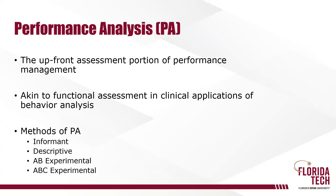Those four methods are informant methods, descriptive methods, AB experimental methods, and ABC experimental methods. Informant methods consist of checklists and questionnaires, oftentimes administered by a consultant or a manager to the employee him or herself, or maybe the supervisor of the employee. The questionnaire or checklist consists of questions that get at some of the possible reasons or variables that might be responsible for the concerning performance.